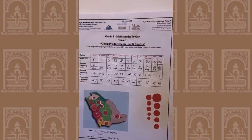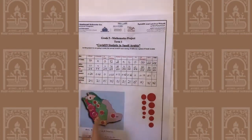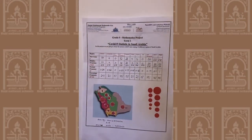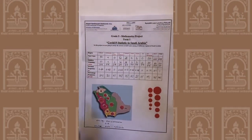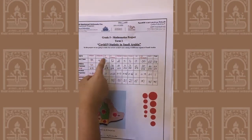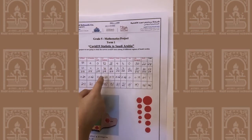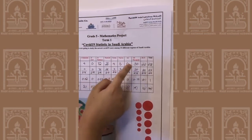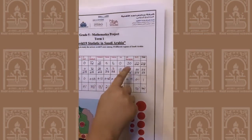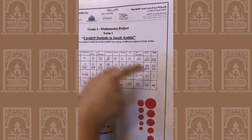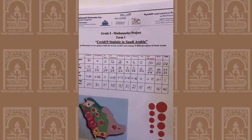As you can see here on the chart, we can see the 10 regions of Saudi Arabia, which are Al-Riyadh, Al-Qasim, Al-Jauf, Al-Medina, Mecca, Tabuk, Najran, Asir, Shurgia, Ad-Hayl, and the total of all the cases recorded.